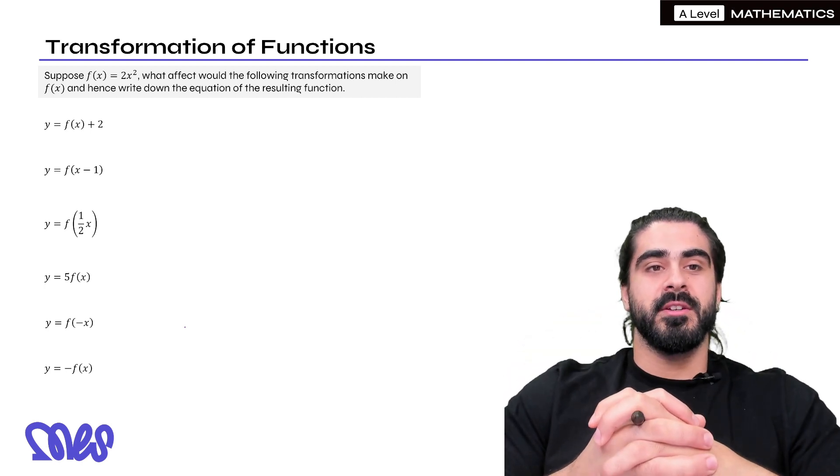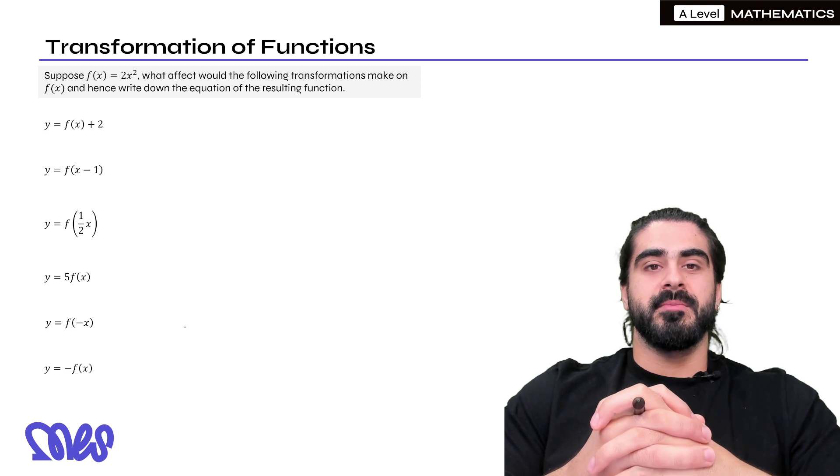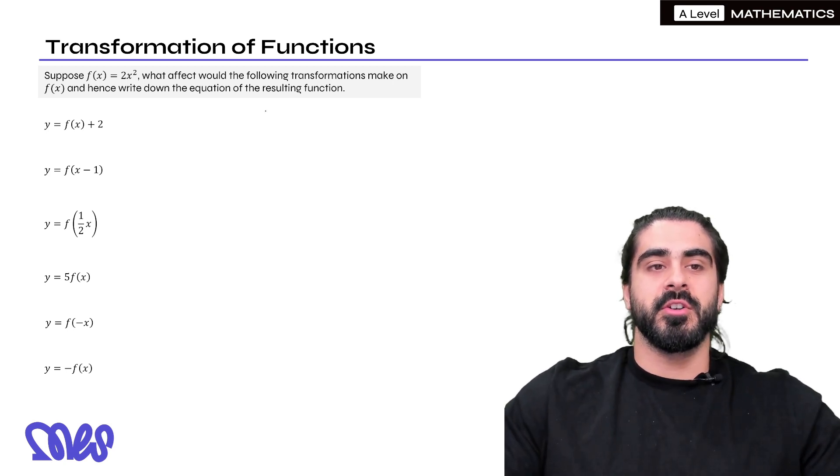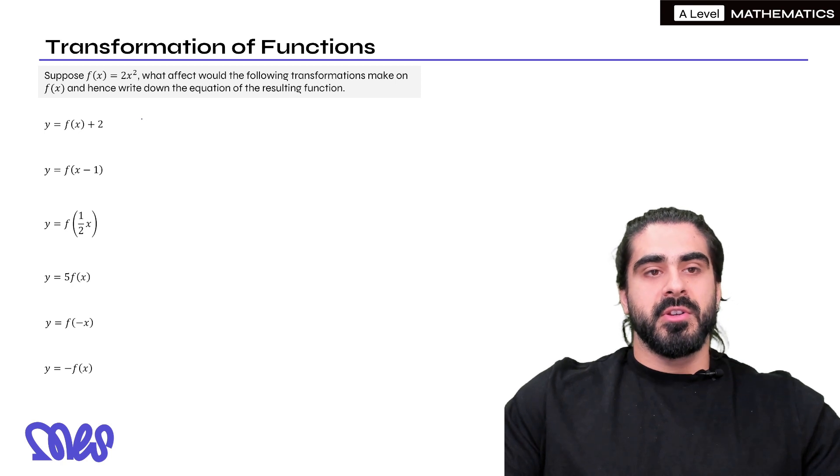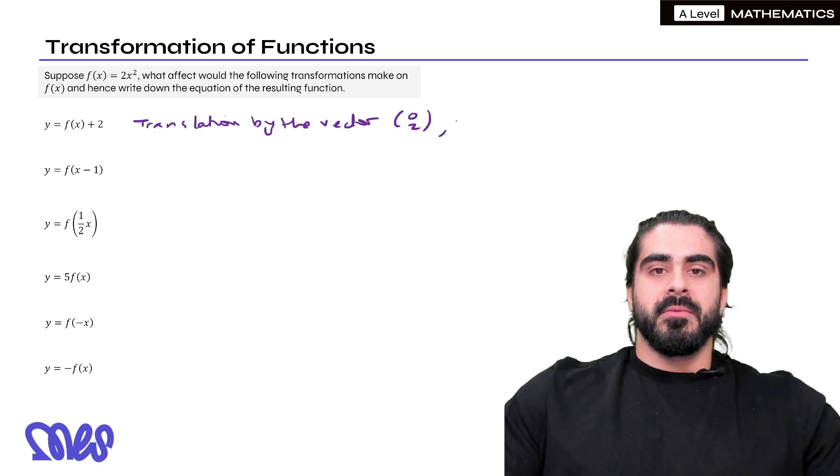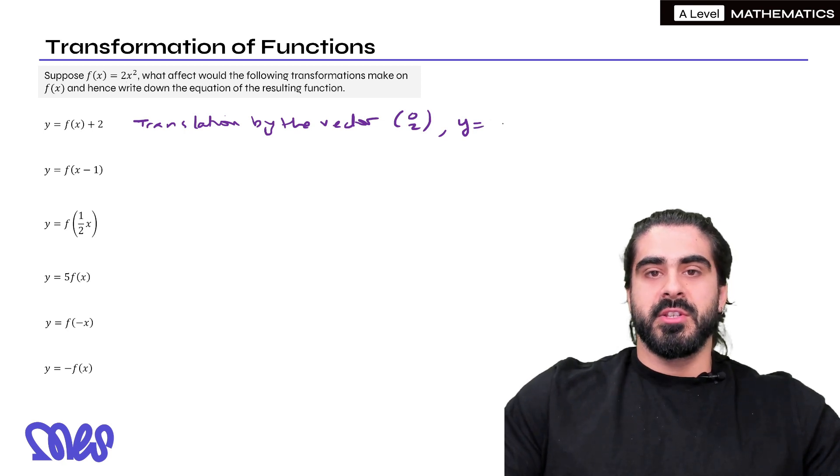So suppose f(x) = 2x² what effect would the following transformations make on f(x) and hence write down the equation of the resulting function. f(x+2), we know that because the plus 2 is outside of the bracket it's affecting the y values and it's doing directly what it says so we're moving it up by 2. So that would be a translation upwards by the vector (0,2). Now what would the resulting function look like? f(x) is 2x² so it would just be 2x² + 2.